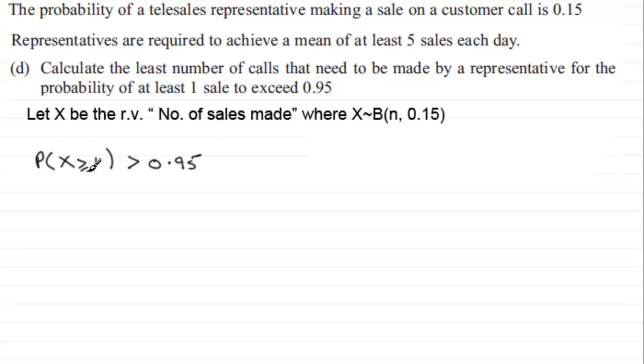So how do we work out the probability that X is greater than or equal to 1? Well, it's best to do the converse of this, and that is to do 1 minus the probability that X equals 0. It's the only value that's left. And that has to be greater now than 0.95.